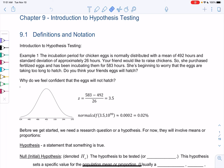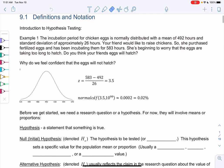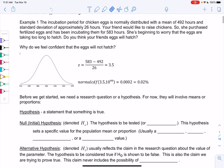Section 9.1 Introduction to Hypothesis Testing. We'll start with definitions and notation. Example one: the incubation period for chicken eggs is normally distributed, so we can use the normal curve, with a mean of 492 hours and a standard deviation of approximately 26 hours.